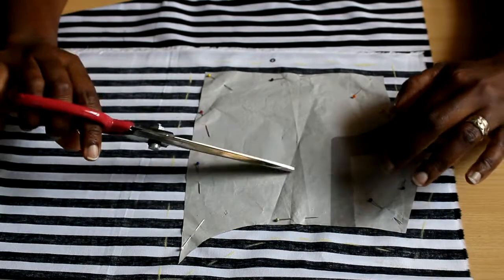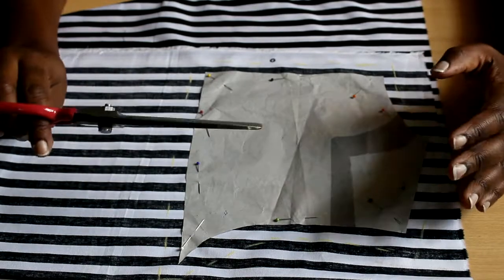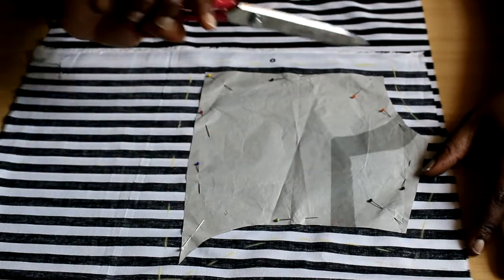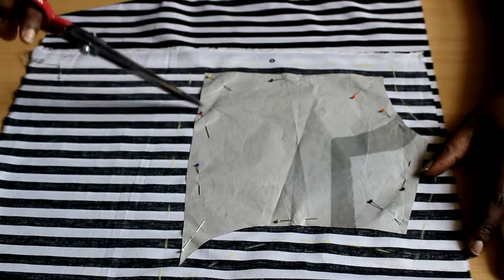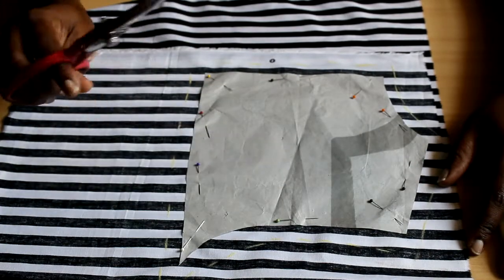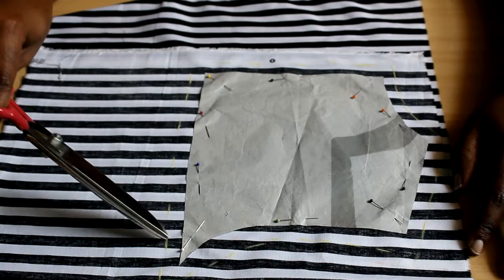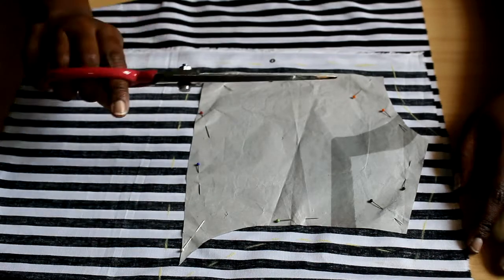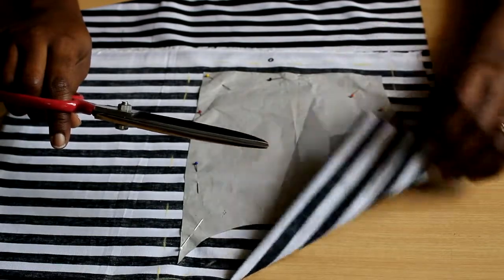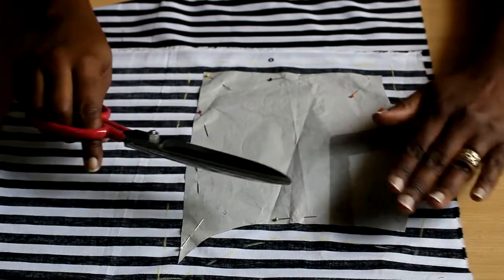So sometimes I might just cut out with the pattern piece like this. And sometimes, depending on what I'm working on, I might trace out this pattern as it is with chalk and remove the pattern piece. It really depends on what I'm doing. But the most important thing is to make sure my layers of fabric have been pinned down so that nothing shifts. As you can see here, there are two layers. You don't want anything moving around.